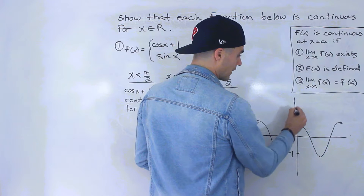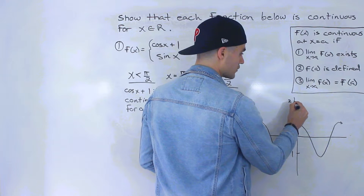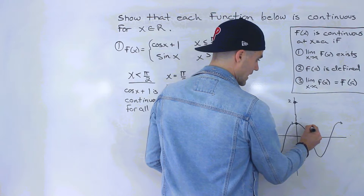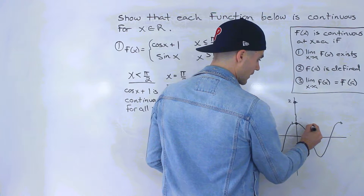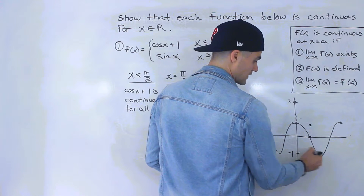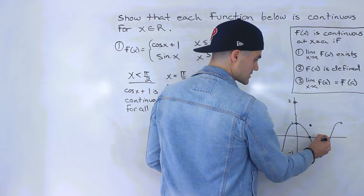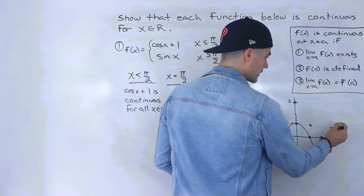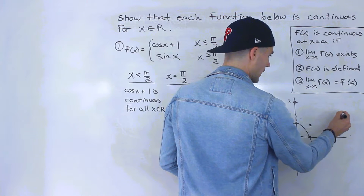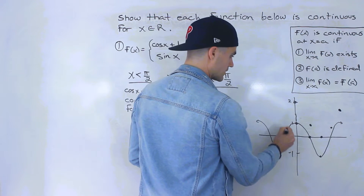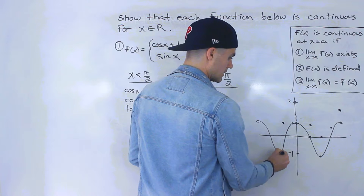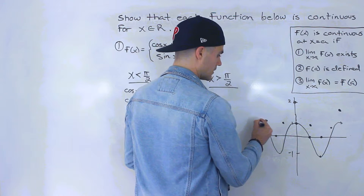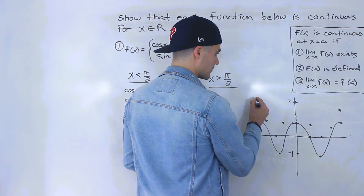So the y value of one becomes two, the y value of zero becomes one, the y value of negative one becomes zero. Then this zero becomes one, and this one becomes two. Here, zero becomes one, this negative one becomes zero, this zero becomes one, and this one becomes two.